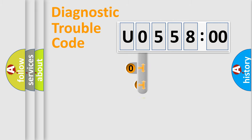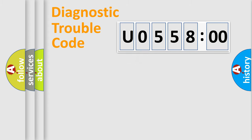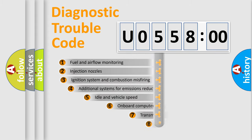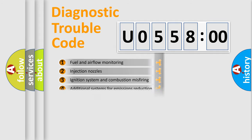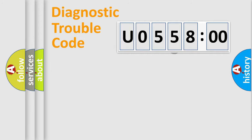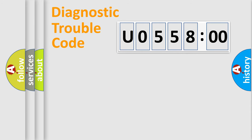This distribution is defined in the first character of the code. If the second character is expressed as zero, it is a standardized error. In the case of numbers 1, 2, or 3, it is a more specific expression of a car-specific error. The third character specifies a subset of errors. The distribution shown is valid only for the standardized DTC code. Only the last two characters define the specific fault of the group.